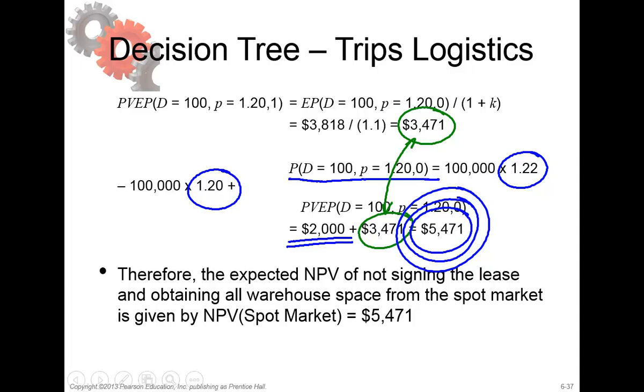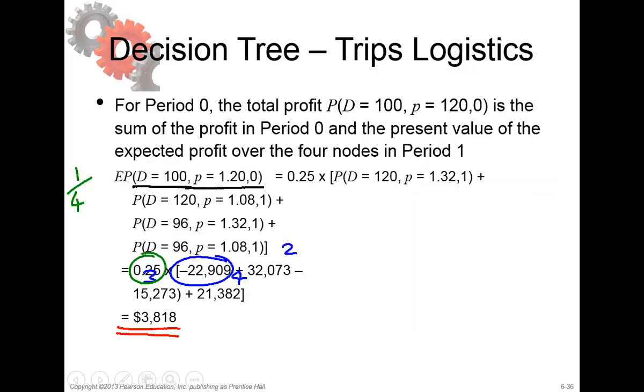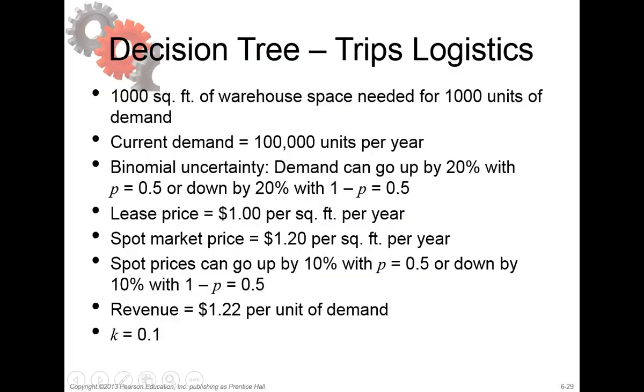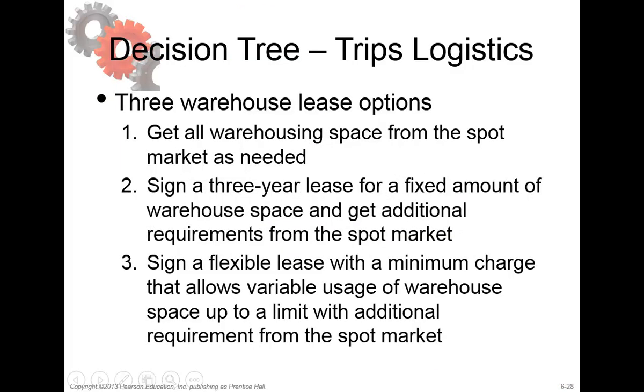And that is the answer to option 1. So option 1 was get all warehousing space from the spot market as needed. We calculated that now and the net present value was 5,400 and a bit. We also calculated for option 2 and we calculated for option 3.